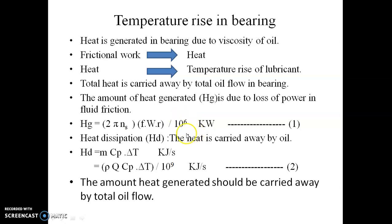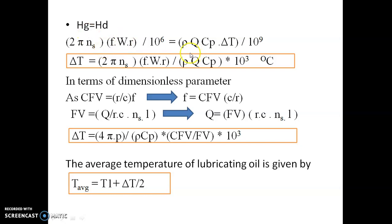Equating these two equations we get the equation for ΔT = 2π ns f W r / (ρ q cp × 10³) degrees celsius. Now this equation we can also write in terms of dimensionless parameters. We know the coefficient of friction variable (r/c) × f which gives f = CFV × c/r, and flow variable q/(rcnsl) gives q = FV × rcnsl. By putting this value in the above equation we can get ΔT = (4.5 p / ρcp) × (CFV / FV) × 10³.